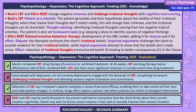Evaluations. March compared CBT, drug therapy (fluoxetine), or combined treatment. At 36 weeks, CBT and drug therapy each had an effectiveness rate of 81%, and combined treatment 86%. CBT also had a more significant reduction in suicidal events than drug treatment. However, some people with depression are too severely depressed to engage with CBT's demands — completing homework, challenging irrational thoughts, and attending sessions require motivation and commitment. Advocates of CBT say it empowers patients and gives a sense of personal efficacy. In contrast, drugs often require a passive role. REBT and CBT may also be overly focused on the present, and clients may want to discuss severe past trauma or actually improve their present situation.